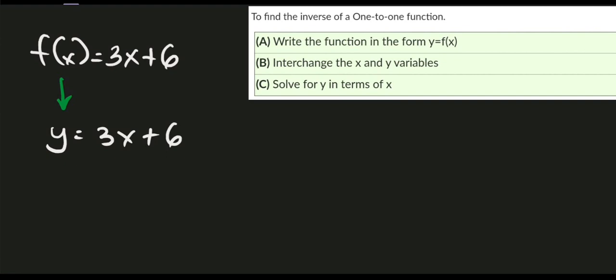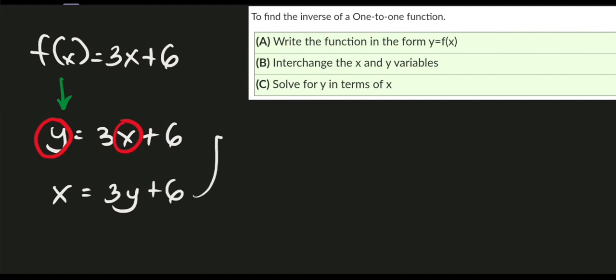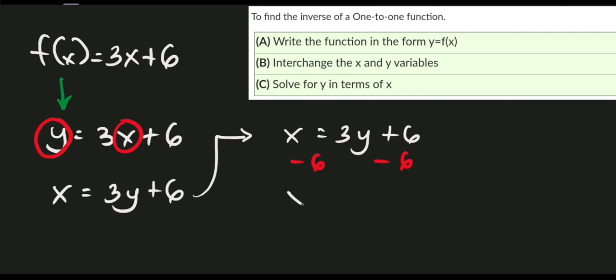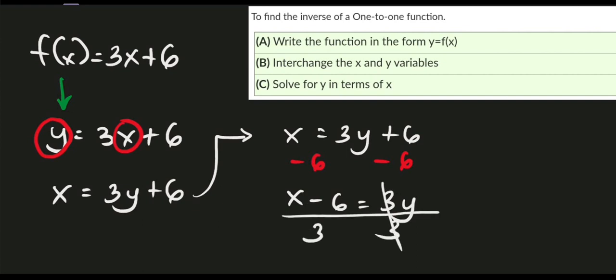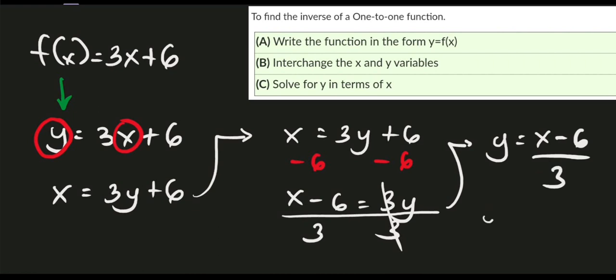Step two: interchange x and y to get x = 3y + 6. Step three: solve for y. Subtract 6 from both sides to get x − 6 = 3y, then divide both sides by 3. Therefore y = (x − 6) / 3, which can also be written as x/3 − 2. So either form is our answer.